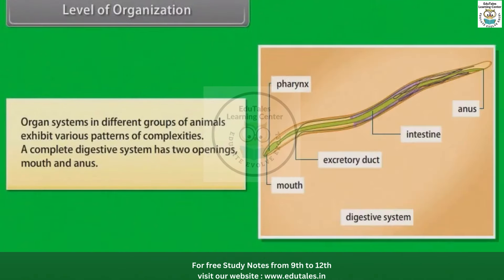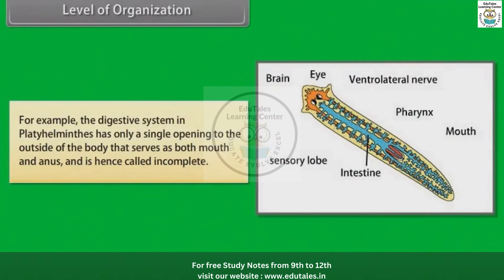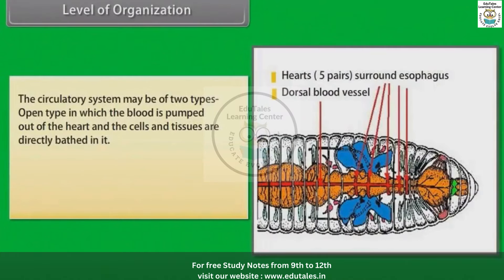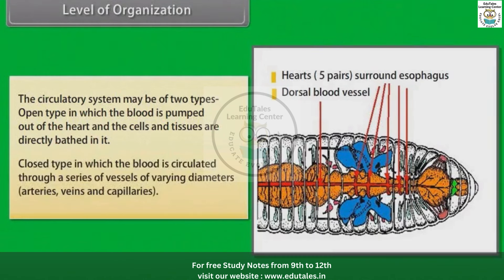Organ systems in different groups of animals exhibit various patterns of complexity. A complete digestive system has two openings, mouth and anus. For example, the digestive system in Platyhelminthes has only a single opening to the outside that serves as both mouth and anus, and is hence called incomplete. The circulatory system may be of two types: open type, in which the blood is pumped out of the heart and the cells and tissues are directly bathed in it; and closed type, in which blood is circulated through vessels of varying diameters — arteries, veins and capillaries.